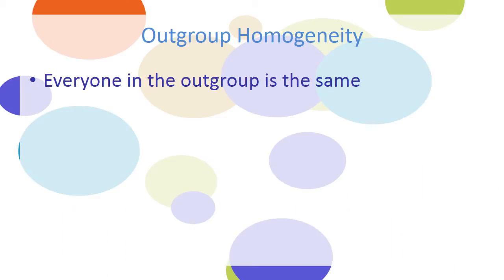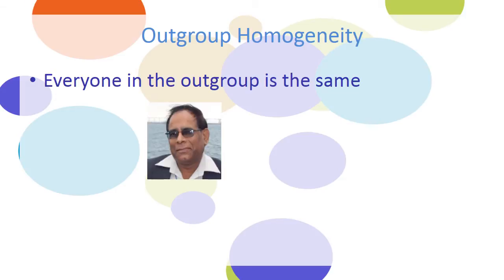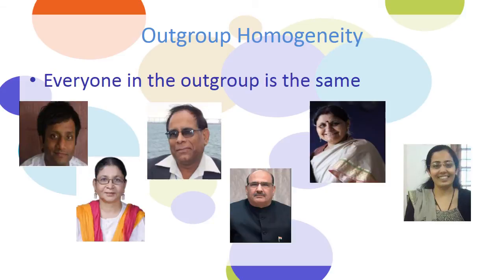Out-group homogeneity is when somebody feels that everybody in the out-group is the same. Here's an Indian man, and if you know something about this Indian man, you may feel that you know something about all Indian people. What happens is you group them all together and say there are no important distinguishing characteristics between them — they are all the same. So if you have an attitude towards one of them, that attitude can be directed towards all of them, and if you know something about one of them, you know something about all of them.